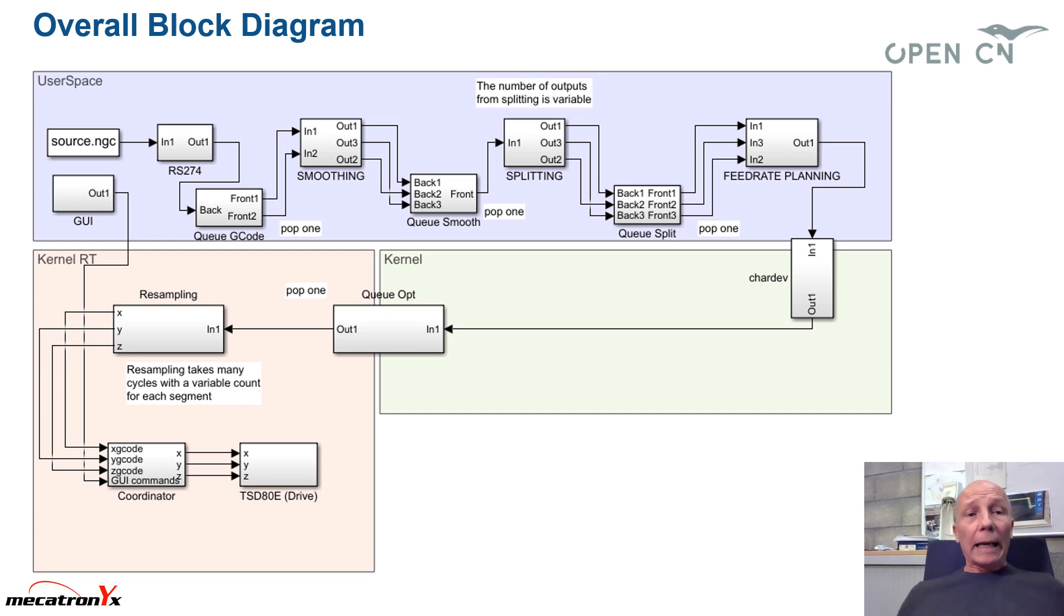OK, I made an attempt to draw an overall block diagram. You can see it here. There are too many pieces, two pieces here, one in the user space. So all optimizations, geometrical and feed rate planning are done in the user space. And resampling is done in the kernel space.